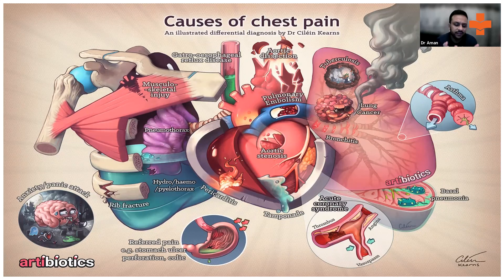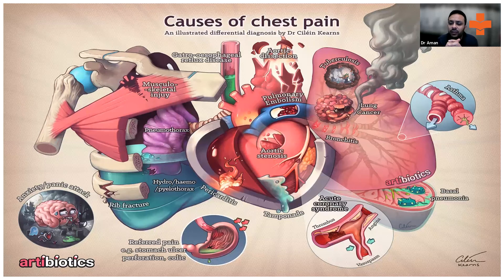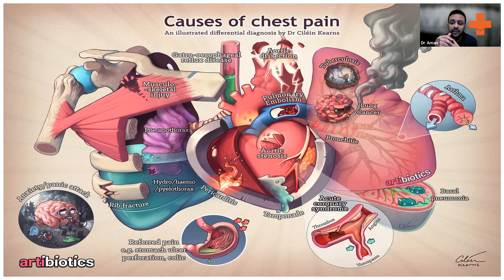Other common causes of chest pain include GORD, acid reflux, asthma, metastatic diseases, and tuberculosis.